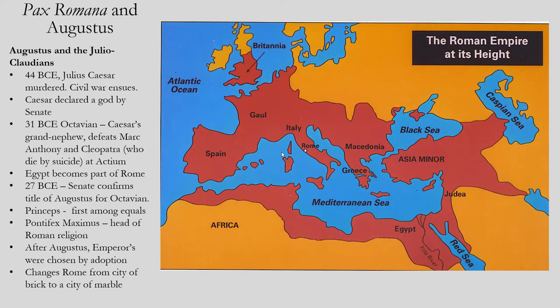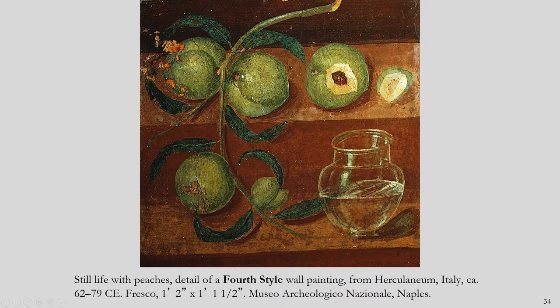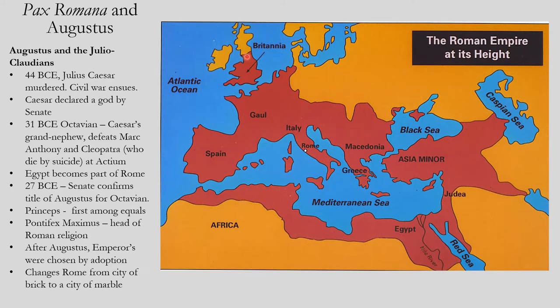We spent the last part of this chapter looking at the Roman Republic. We are now moving into the Roman Empire, and you're looking at a map of the Roman Empire at its height. It is during the imperial period that Rome grows to its greatest size. It stretches over three continents — basically an empire from the border of Scotland all the way to Baghdad in modern-day terms.